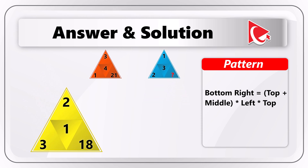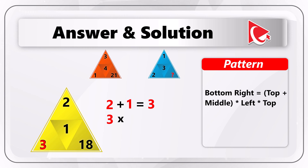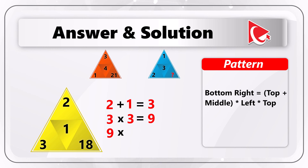Let's look at the first yellow triangle. To get to the number in the bottom right corner, we first need to add 2 and 1, and the result is 3. Then we multiply the result by the number in the bottom left corner: 3 multiplied by 3 equals 9. Then, as the last step, we multiply the result — which is 9 — by 2, which is the top number, and the end result is 18.